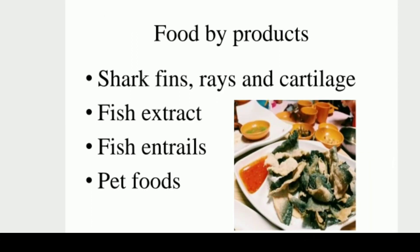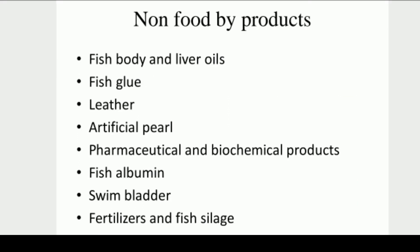Food by-products include shark fish extract and fish pet foods. Non-food by-products include fish body and liver oils, fish glue, leather, artificial palm, pharmaceutical and biochemical products, fish albumin, swim bladder, fertilizers, and fish sludge.